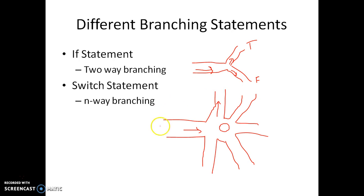Similarly, the switch statement is called an n-way branching statement, which means once an expression is evaluated it can choose multiple paths, whereas in if you have either true or false. A classic example is checking whether a character is a vowel — the condition is true if the character is a, e, i, o, or u. So out of 26 options, five options turn out to be vowels.